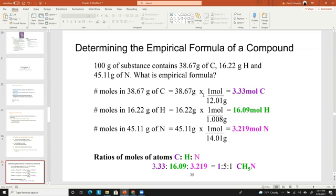For carbon the molecular weight is 12 so we're going to divide 38.67 by 12 and we're going to get 3.33 moles C. For hydrogen we're going to divide that by the molecular mass of hydrogen which is 1.008 and for nitrogen by 14.01.